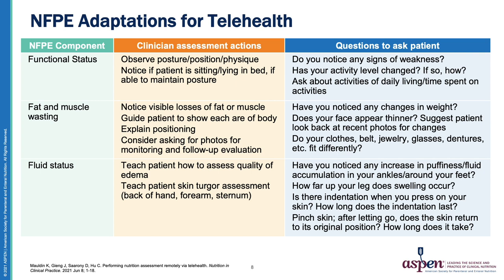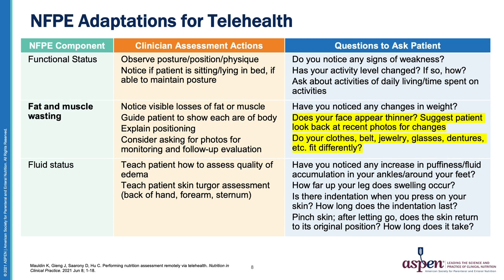For example, to assess fat and muscle wasting, the clinician can guide the patient to show each area of the body, explain positioning, and ask questions such as: does your face appear thinner to you? Suggest patients look back at recent photos for changes. Other questions include: does your clothes, glasses, jewelry, and or dentures, if applicable, fit differently? Are you using your belt on a tighter notch?